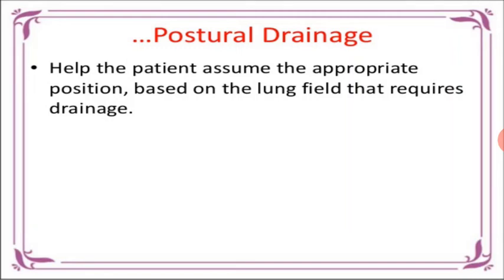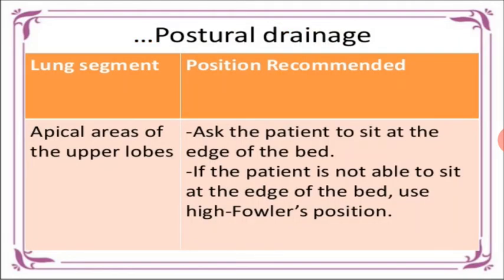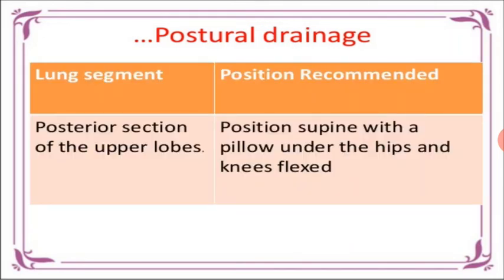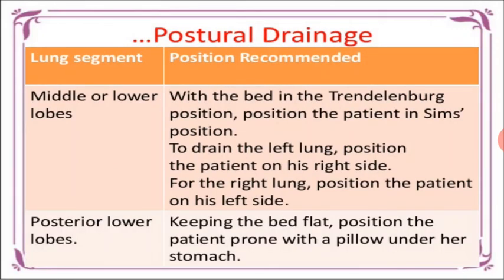Help the patient assume the appropriate position based on the lung field that requires drainage। For the apical area of the upper lobe, give high Fowler's position। For the posterior section of the upper lobe, give supine position with a pillow under the hip and knee flexed। For the middle or lower lobe, tilt the bed and position the patient in Sims position।